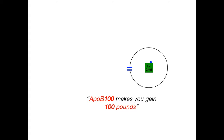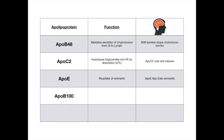Here's the slide from the previous video where we covered APO-B48, APO-C2, and APO-E — their functions and dirty medicine mnemonics. Now let's update this slide and add APO-B100. The function of APO-B100 is that it binds the LDL receptor for endocytosis into peripheral cells. The mnemonic is APO-B100 makes you gain 100 pounds — because APO-B100 interacts with the LDL receptor to allow LDL and all its associated fat content to get into the peripheral cells.